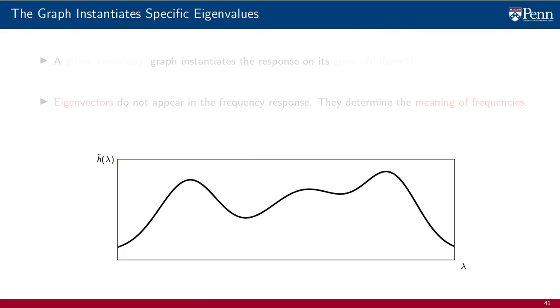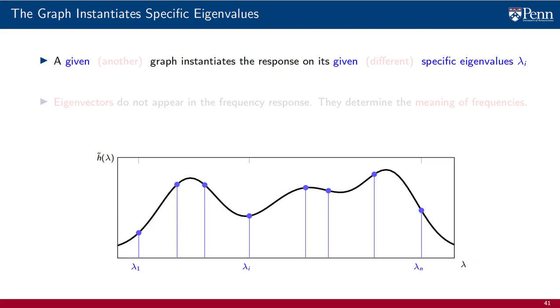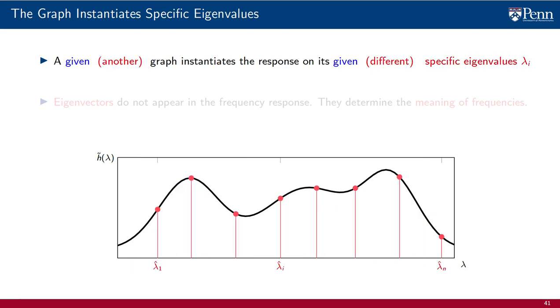What is then the role of the graph? Well, when given a specific graph, the response is instantiated on its specific eigenvalues lambda i. And when we are given a different graph, the response is instantiated on a different set of eigenvalues hat lambda i. Thus, first and foremost, the graph determines the eigenvalues of the response that are instantiated when the filter is run on a particular graph. This is a deep insight. It allows us to study the effect of running the same filter on different graphs. This is how we will obtain stability and transferability results.